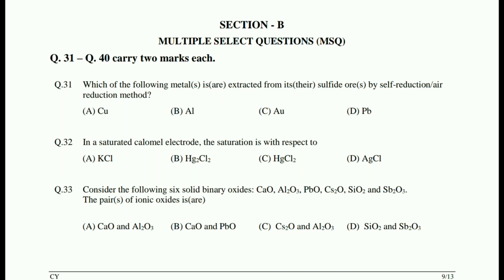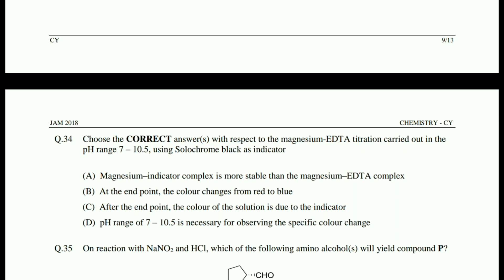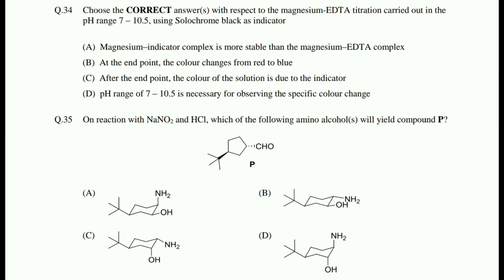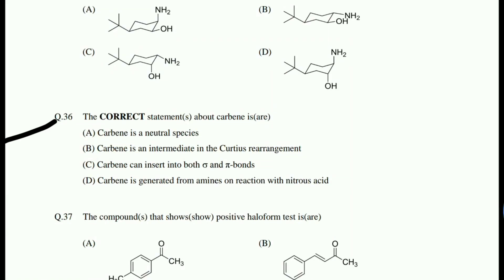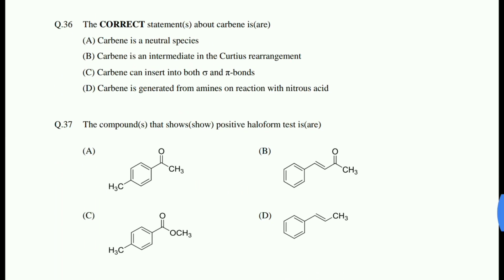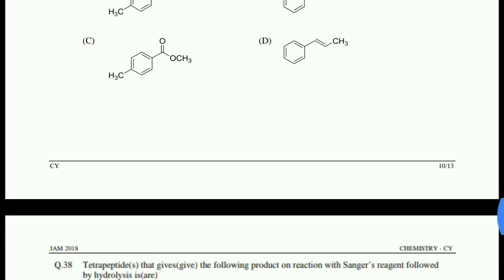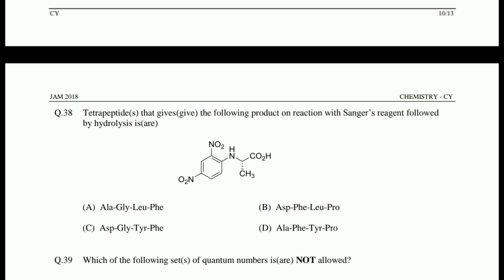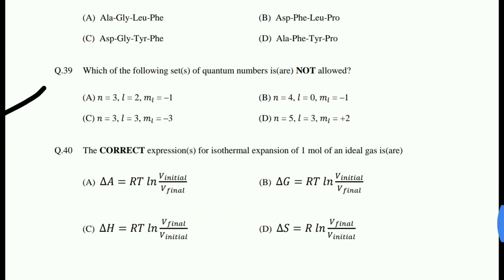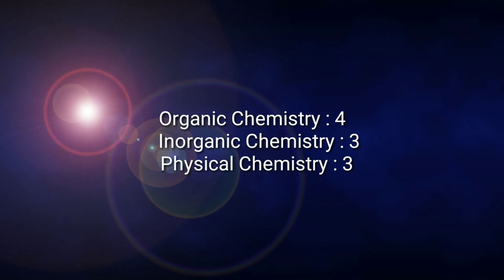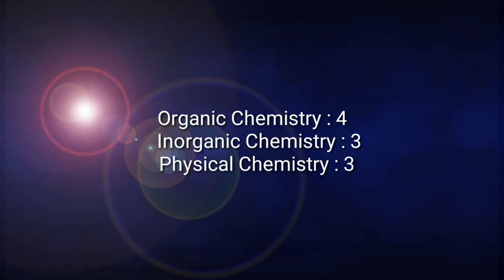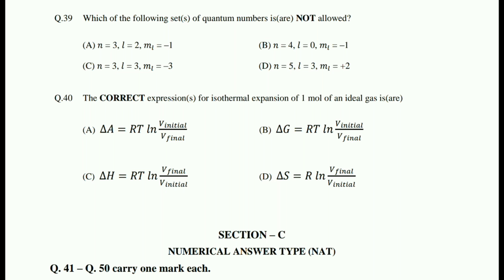Now let's talk about Section B. Section B contains MSQ type questions — there are total 10 questions, each containing 2 marks, and total 20 marks. The first question was from inorganic chemistry — extraction of metals. Second question from physical chemistry — conductance. Third question from inorganic chemistry — P block elements. Fourth question (34th overall) was from acid-base inorganic chemistry. The 35th question was from organic chemistry — cyclohexane. 36th was basic organic chemistry — carbon chemistry. 37th question was organic chemistry — named reactions. 38th was organic chemistry — amino acids. 39th was physical chemistry — atomic structure. 40th was physical chemistry — thermodynamics. So there were total three physical chemistry, four organic chemistry and three inorganic chemistry questions in Section B.